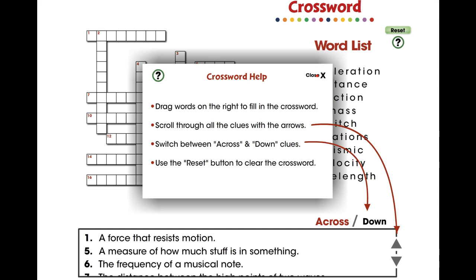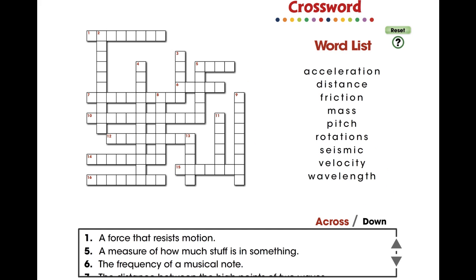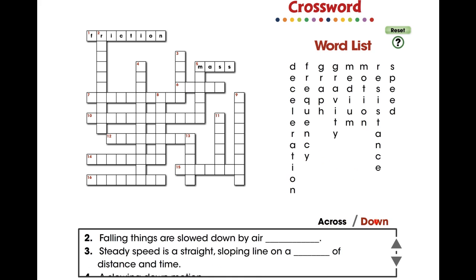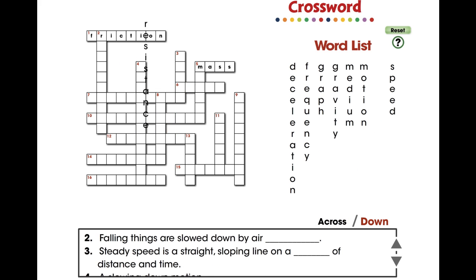In this crossword app, 17 vocabulary words are provided with across and down clues. For middle school, this app is great for vocabulary and comprehending all the words centered around the vocabulary in the topic of motion.